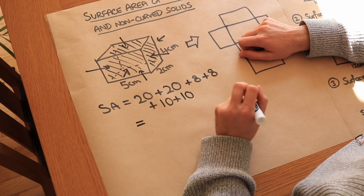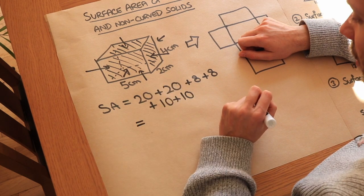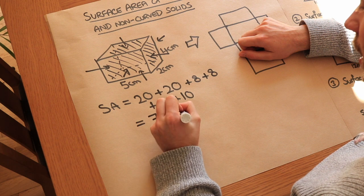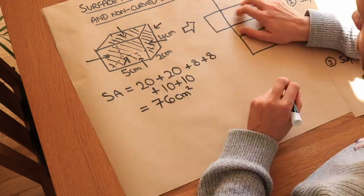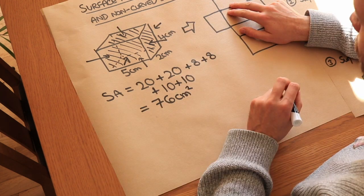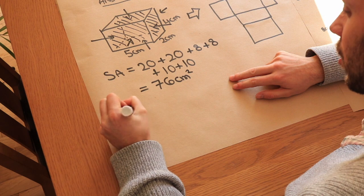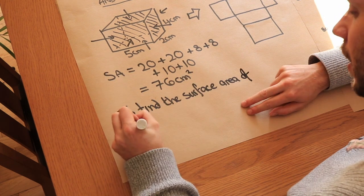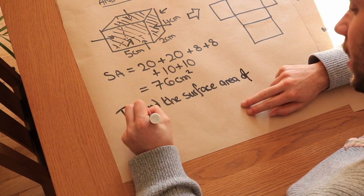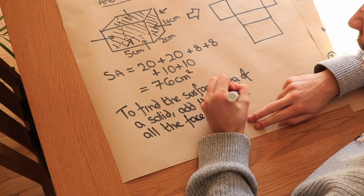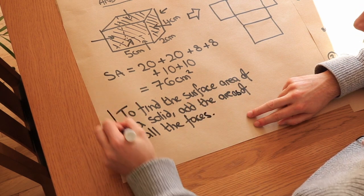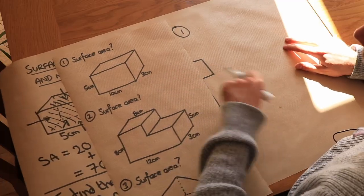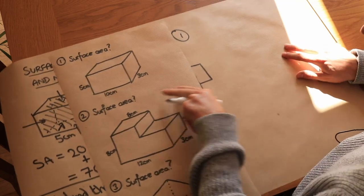In total that gives us 76 centimetres squared. To summarise: to find the surface area of a solid, add the areas of all the faces. Let's use that to find the surface area of various solids.